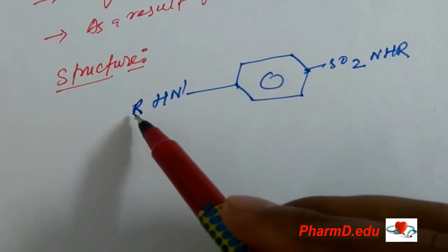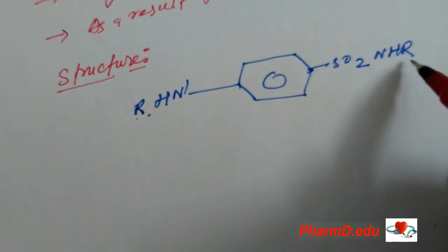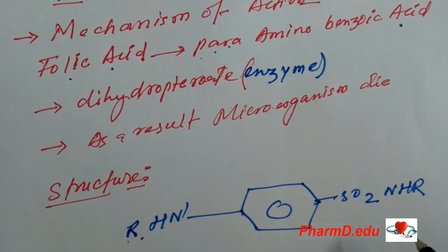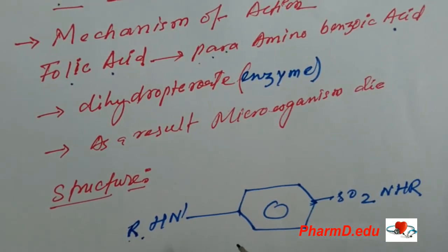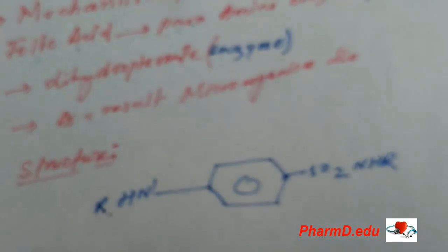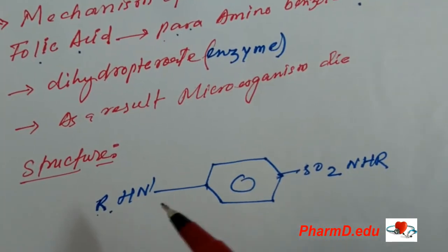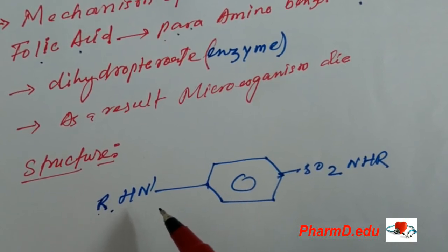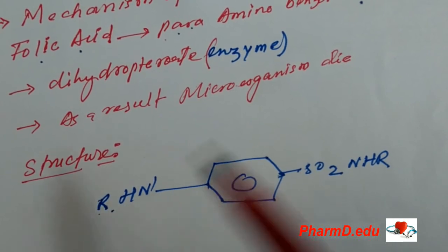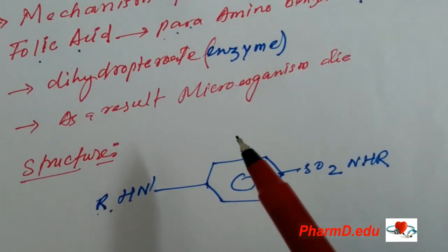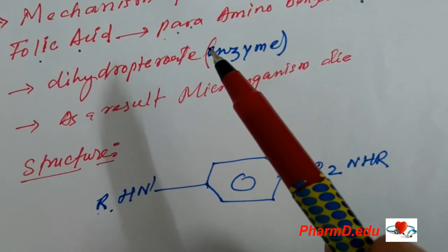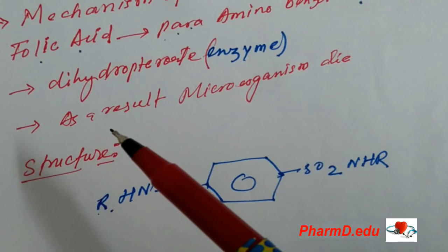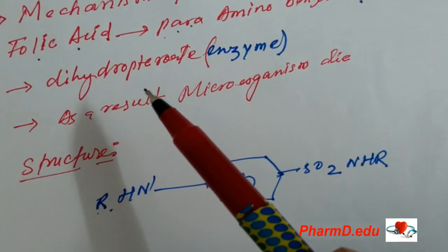Here, R represents the derivative substitution position. Depending on what is placed at R, it will form different products. Based on their duration of action, sulfonamides are divided into four classes: long-acting sulfonamides, intermediate-acting sulfonamides, short-acting sulfonamides, and ultra-long-acting sulfonamides. This is the classification of sulfonamides depending on duration of action. Thank you very much — I hope you understood. If you like this video, comment below and subscribe to this channel.